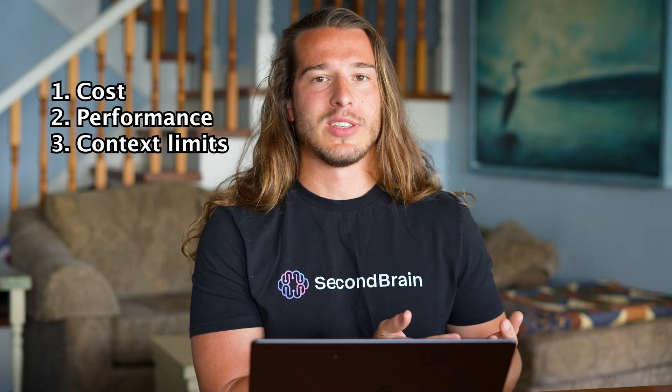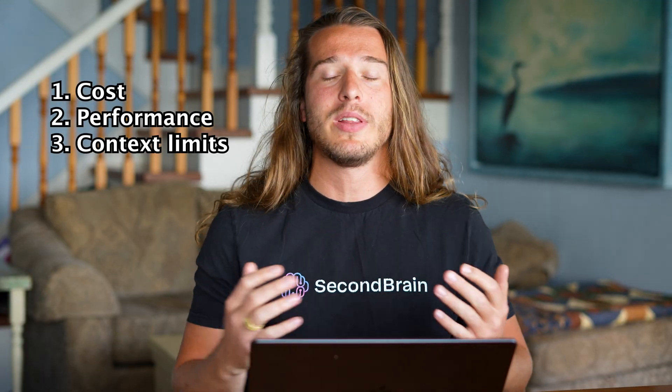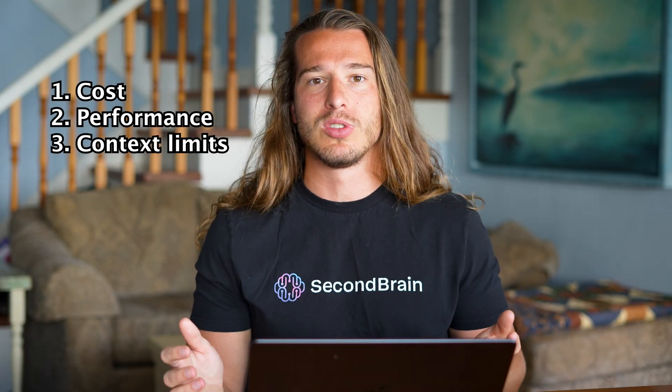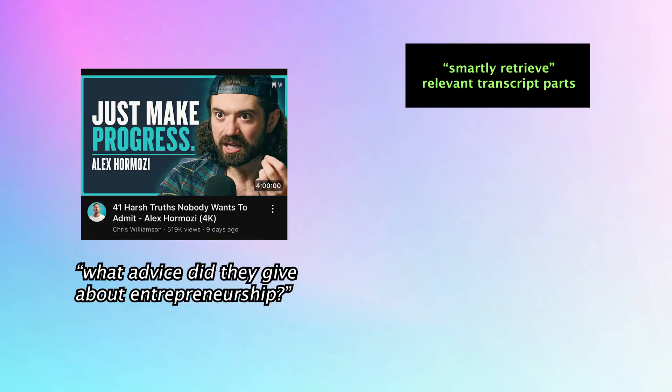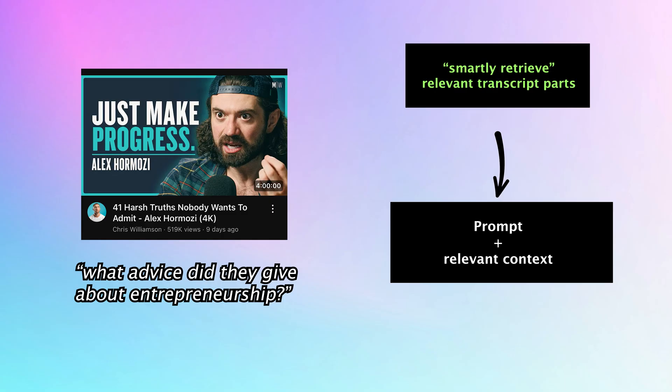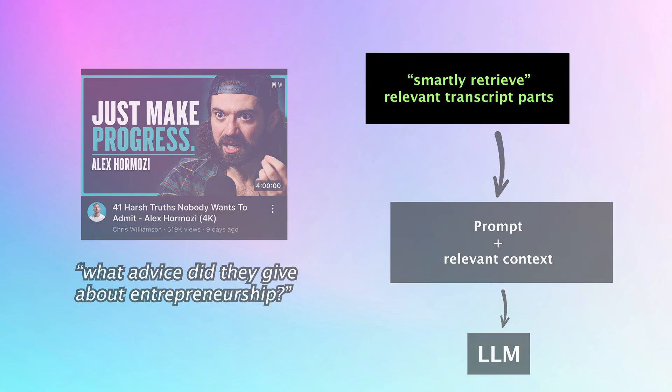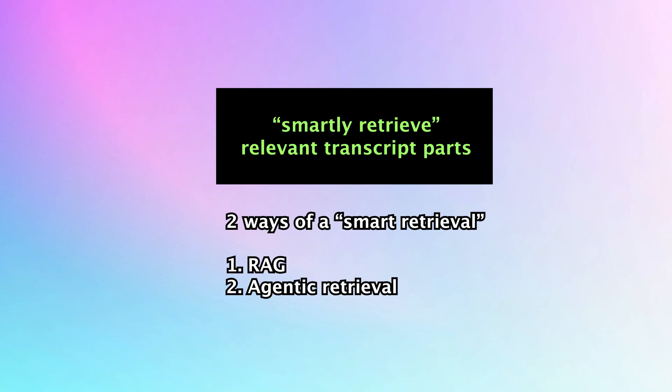But sometimes it's even not possible because LLMs have limited context. We might be able to pass the entire transcript, but what if we're chatting with 20 massive books? It simply would not be possible. So in a smart way, you want to retrieve only the relevant parts from the transcript and pass them to the LLM to answer. And this smart retrieval is what RAG and agentic retrieval are.